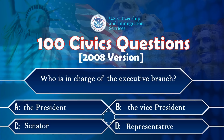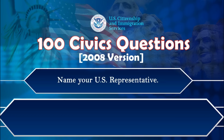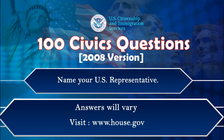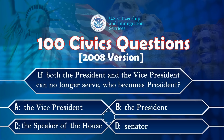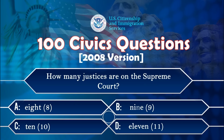Who is in charge of the executive branch? The president. How many justices are on the Supreme Court? Nine.